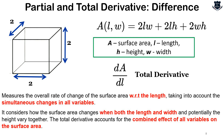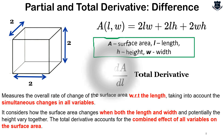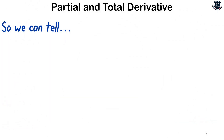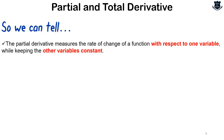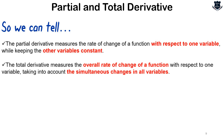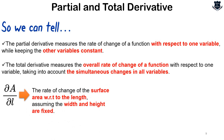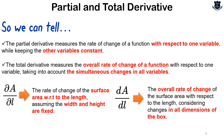To summarize: the partial derivative measures the rate of change of a function with respect to one variable while keeping other variables constant. The total derivative measures the overall rate of change with respect to one variable, taking into account simultaneous changes in all variables. So del A by del l gives the rate of change of surface area with respect to length assuming width and height are fixed, while dA by dl gives the overall rate of change considering changes in all dimensions.